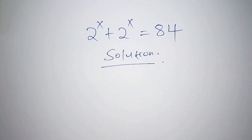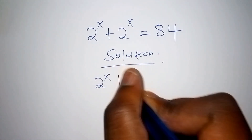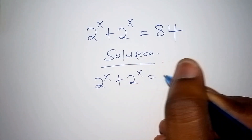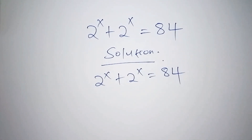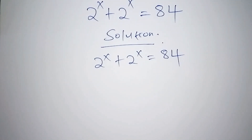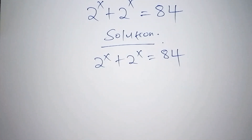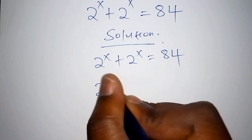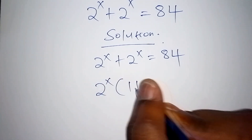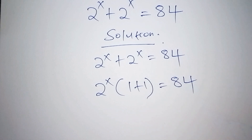We shall have 2 to the power of x plus 2 to the power of x equals 84. The first thing we are going to do is factorize: this can be written as 2 to the power of x into the bracket (1 plus 1) equals 84.